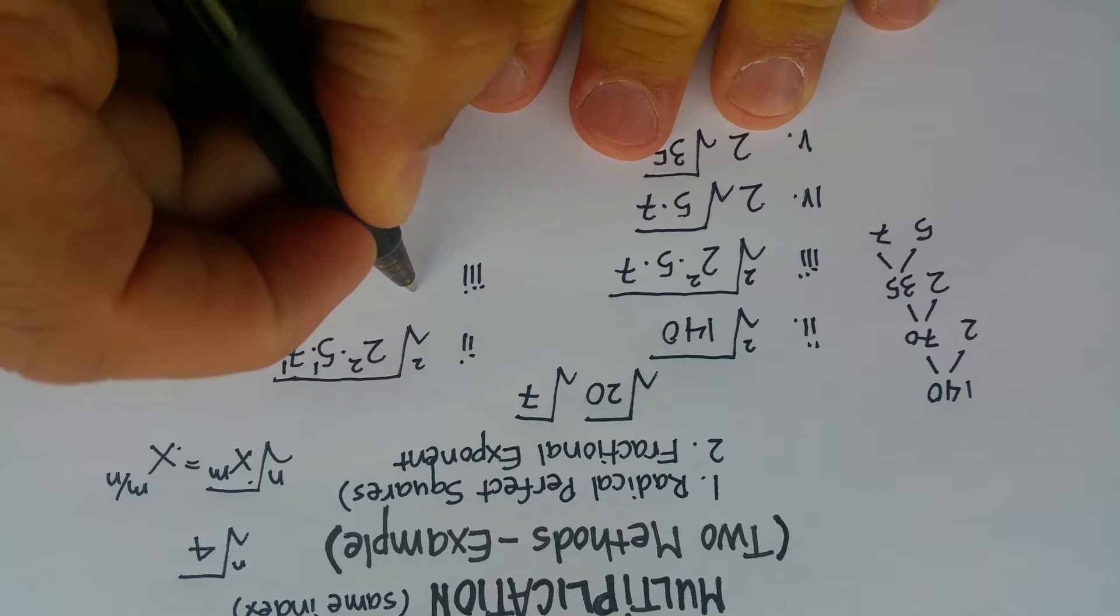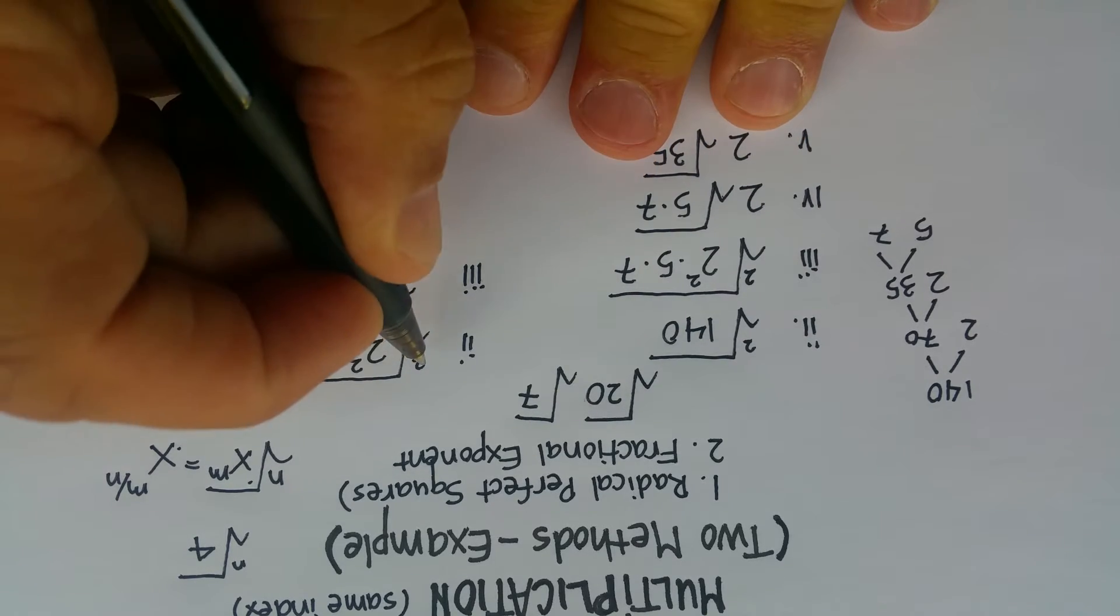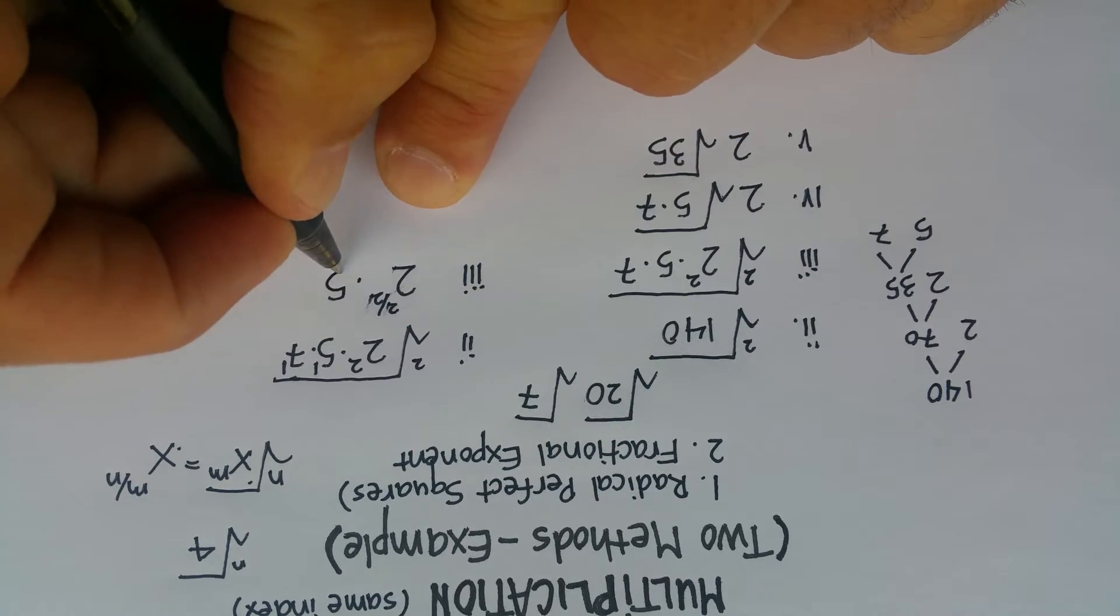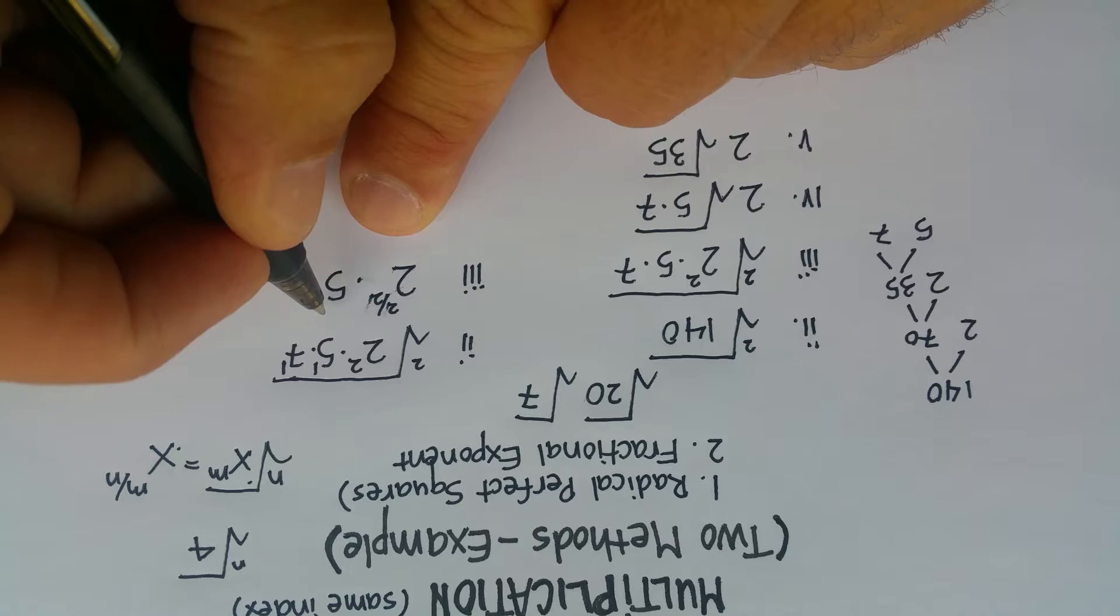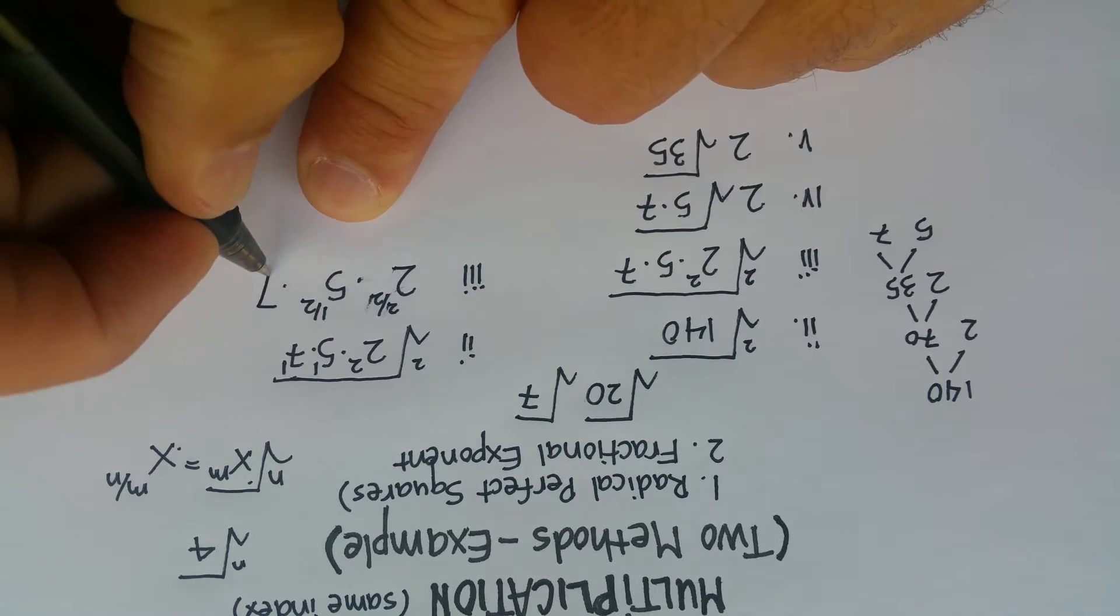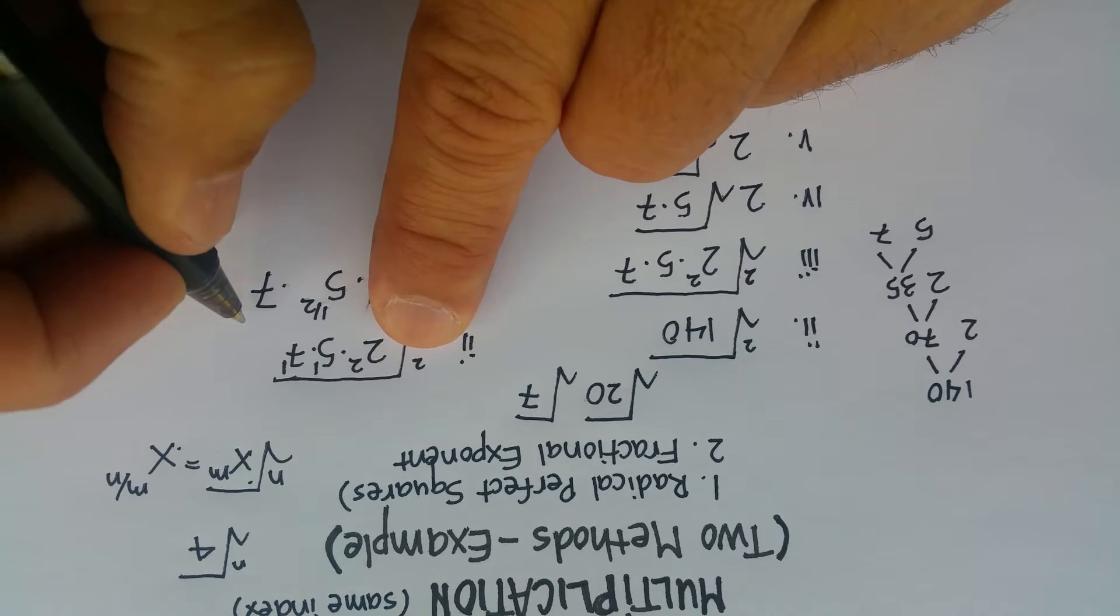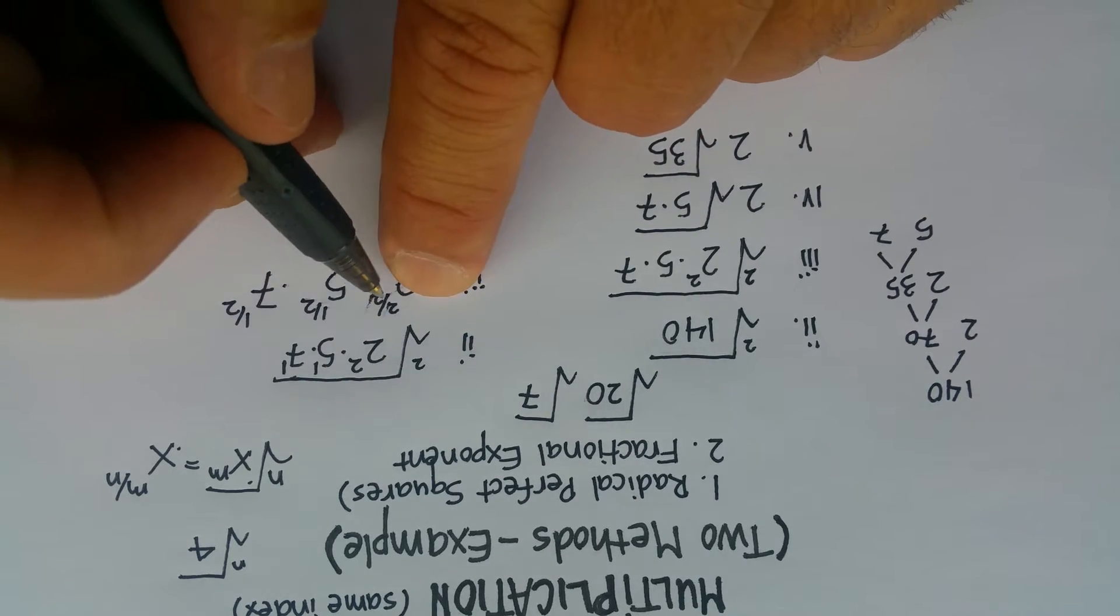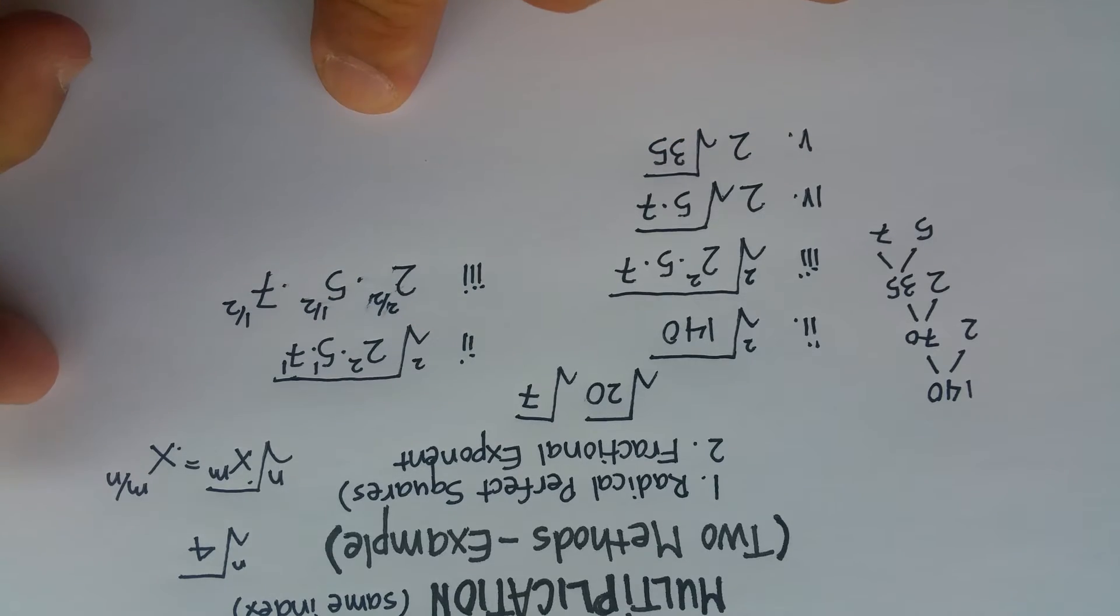So here I'm going to get 2 to the 2 over 2. Here I'm going to get 5 to the 1 over 2. And here I'm going to get 7 to the 1 over 2. Now, you don't put this back under a radical sign because this takes care of that radical sign.